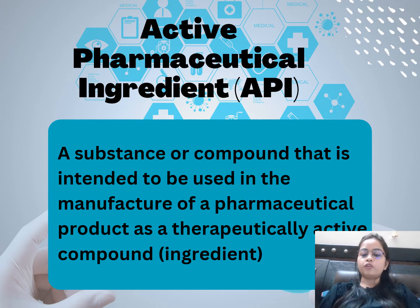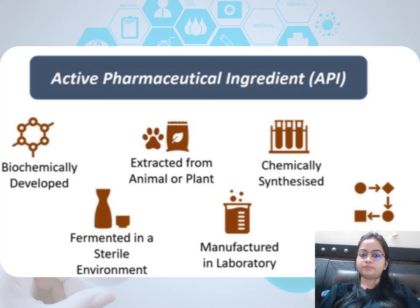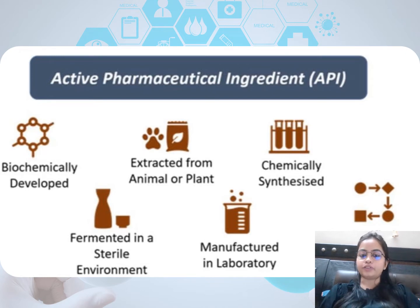First of all, we will discuss about API. API is a substance or compound that is intended to be used in the manufacture of a pharmaceutical product as a therapeutically active compound. API can be biochemically developed, extracted from animal or plant, chemically synthesized, fermented in a sterile environment, or manufactured in a laboratory.